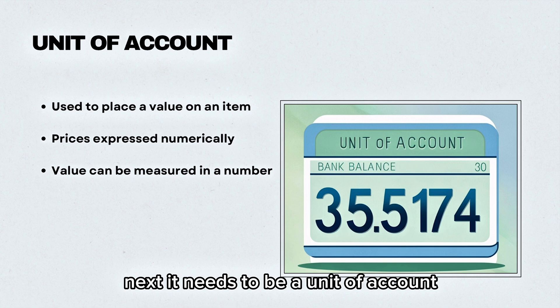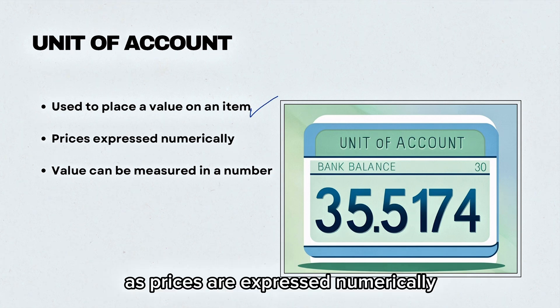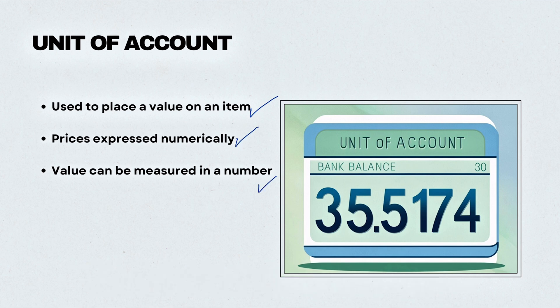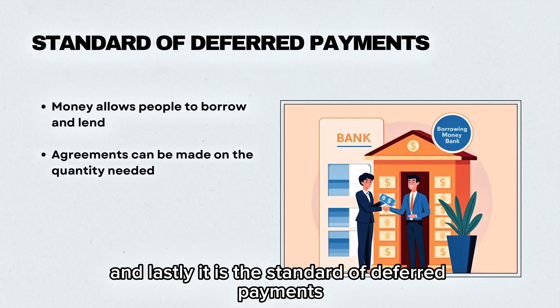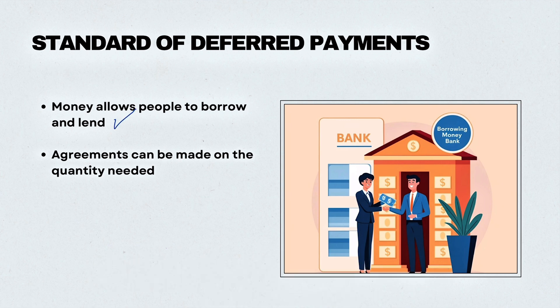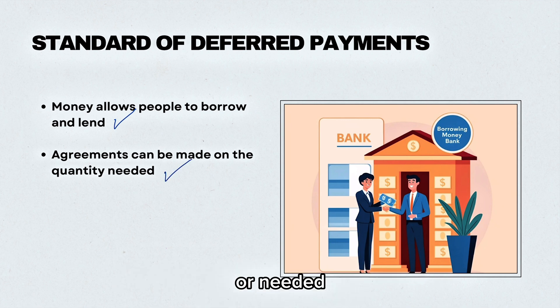It needs to be a unit of account as it makes it much easier to value an item, as prices are expressed numerically and the value can be measured in a number. Lastly, it is the standard of deferred payments. This means that money allows people to borrow and lend, and agreements can be made on the quantity required or needed.